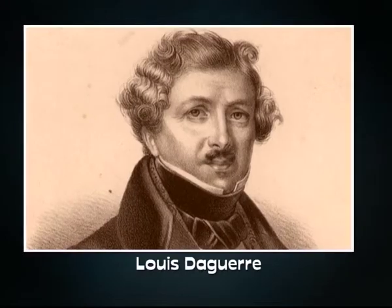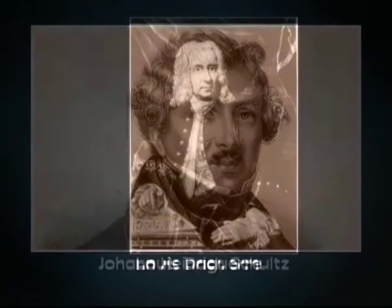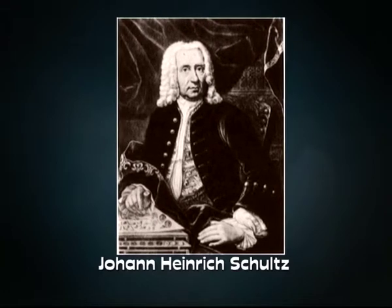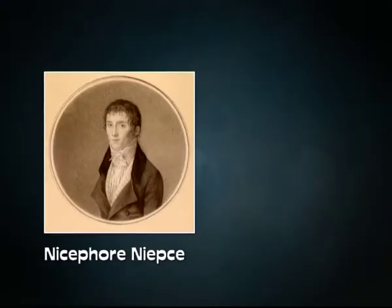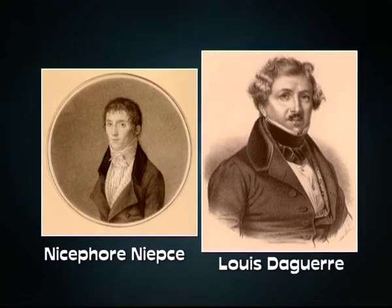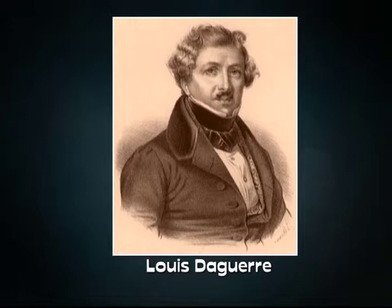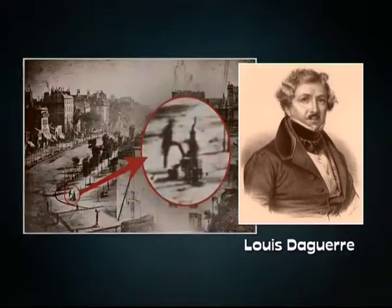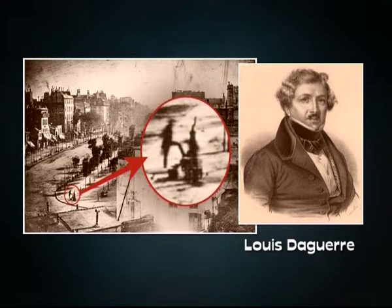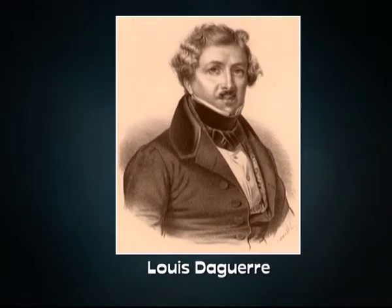Working in conjunction with Louis Daguerre, they experimented with silver compounds based on Johann Heinrich Schulze's discovery in 1816 that a silver and chalk mixture darkens when exposed to light. Niépce died in 1833, but Daguerre continued the work, eventually culminating with the development of the Daguerreotype in 1837. Daguerre took the first ever photo of a person in 1838, when, while taking a Daguerreotype of a Paris street, a pedestrian stopped for a shoeshine long enough to be captured by the long exposure of several minutes. Eventually, France agreed to pay Daguerre a pension for his formula in exchange for announcing his discovery to the world as the gift of France, which he did in 1839.